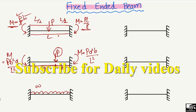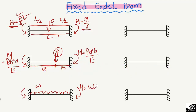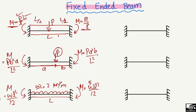When there is a uniformly distributed load W acting over the entire length of the fixed-ended beam, the moment values at both ends are equal. The moment at each end equals WL²/12, where W is the uniformly distributed load in kilonewtons per meter, L is the length of the beam, and 12 is the constant. This formula is used to find the moment for a UDL over the full length of a fixed-ended beam.